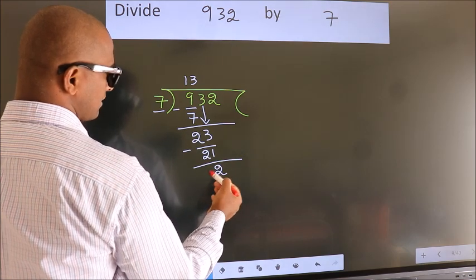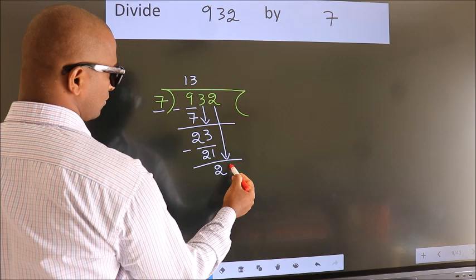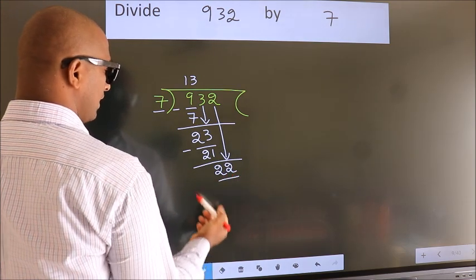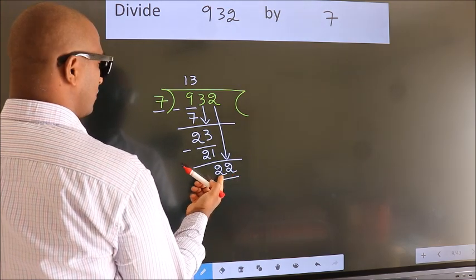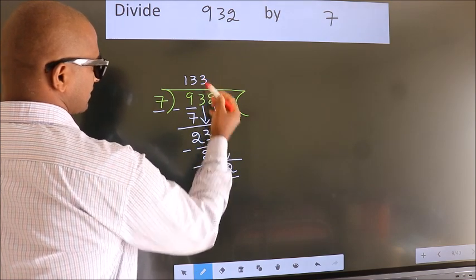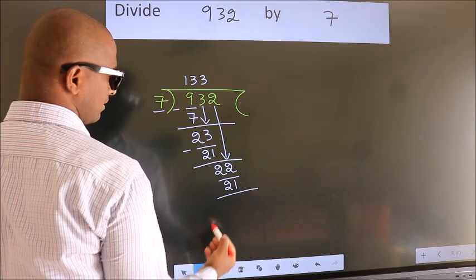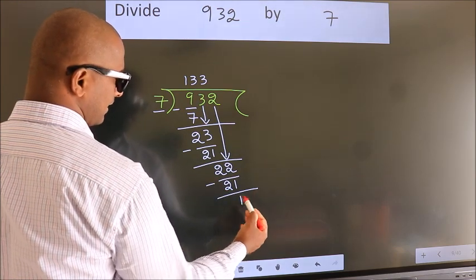After this, bring down the beside number. So 2 down. So 22. A number close to 22 in 7 table is 7 threes 21. Now we subtract. We get 1.